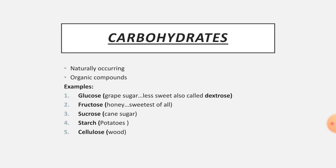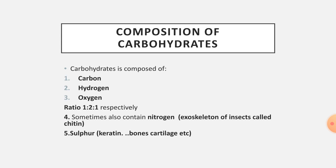Fructose is found in honey — keep in mind that fructose is the sweetest of all sugars. Sucrose is obtained from cane sugar. Starch is present in potatoes, and cellulose is found in wood. All of these are examples of carbohydrates familiar in our daily life. The composition of carbohydrates is carbon, hydrogen, and oxygen in the ratio 1:2:1.